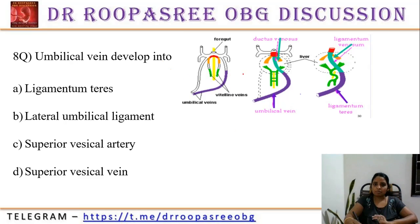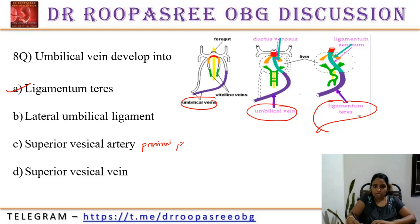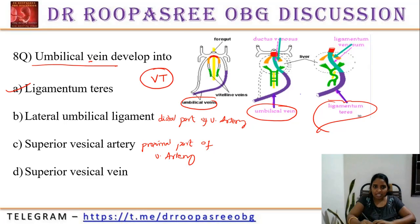The fate of the umbilical vein: the umbilical vein develops into ligamentum teres. The proximal part of the umbilical artery develops into the superior vesicle artery, and the distal part develops into the lateral umbilical ligament. There are two umbilical arteries and one umbilical vein. Remember: vein develops into ligamentum teres.